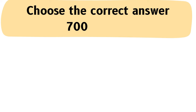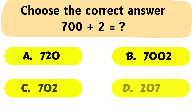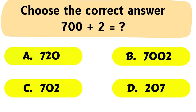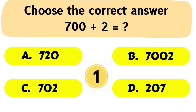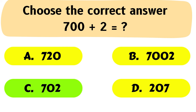Question No. 7: Choose the correct answer — 700 plus 2 equals to? The correct answer is Option C: 702.